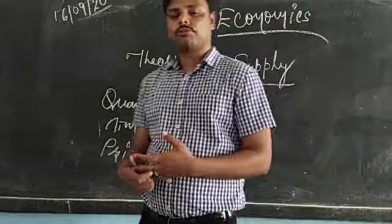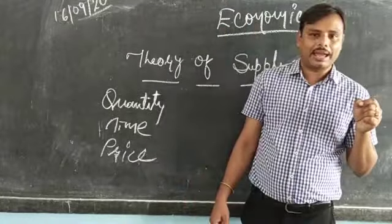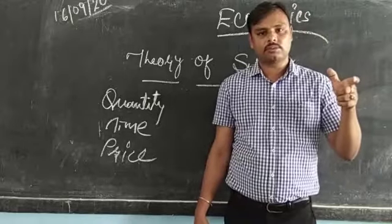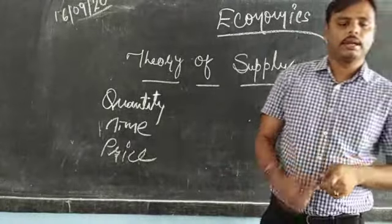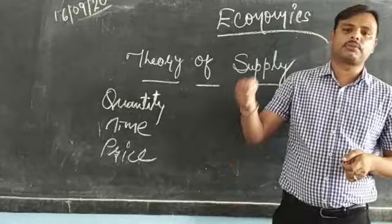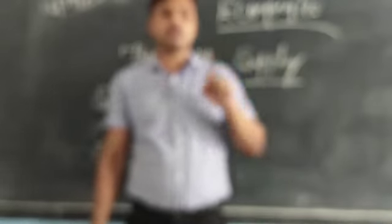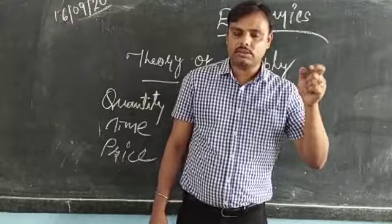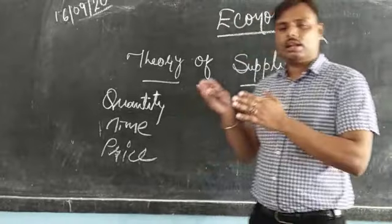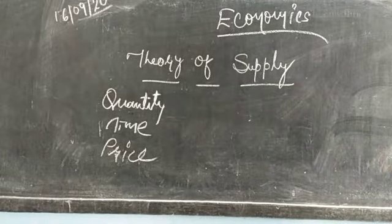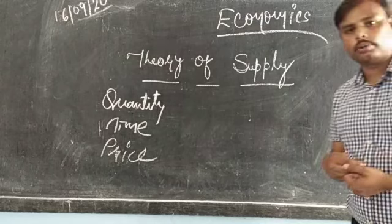In order to understand this better, assume yourself as a manufacturer of a product. What would be your vision? When will you try to supply more? When the prices of the commodity rise, then only you will supply more. If the prices of the commodity are rising, more supply will take place. In Demand it followed an inverse ratio — when prices were rising there was less demand. But here the relation between supply and price is positive.